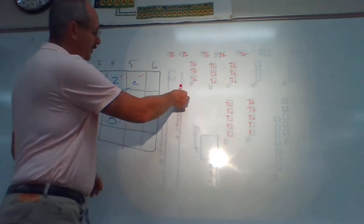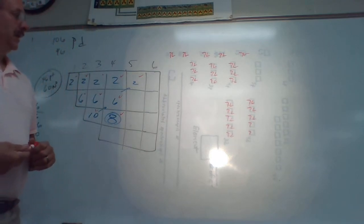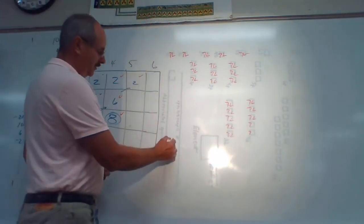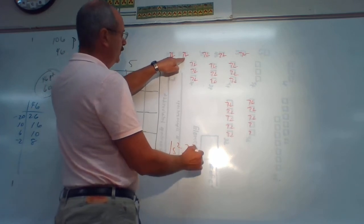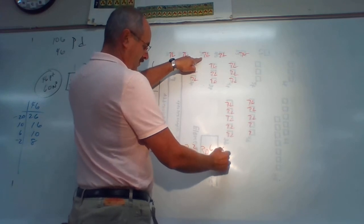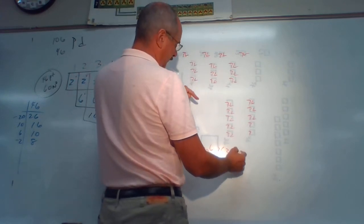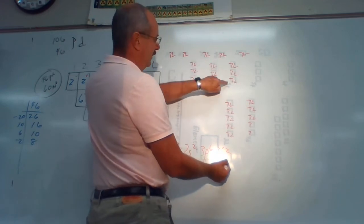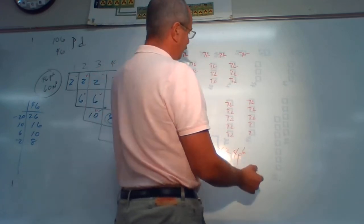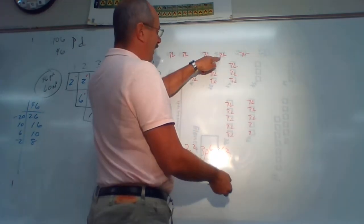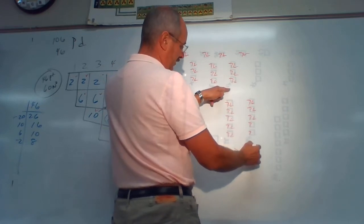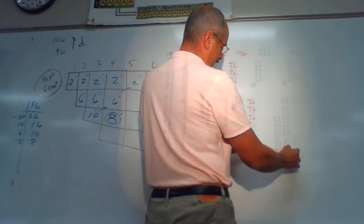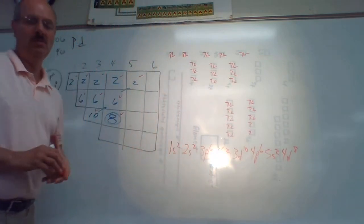Now I have to do the spectroscopic notation. So: 1s2, 2s2, 2p6, 3s2, 3p6 — then I jump down to 3d10, then 4p6, then 4s2... excuse me, after 4s2 I jump down to 3d10, then 4p6, then 5s2, then 4d8. That concludes palladium.